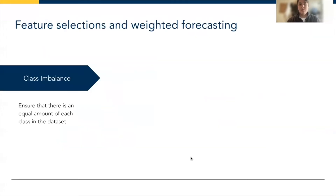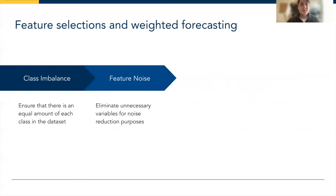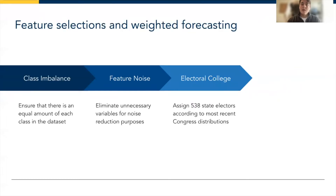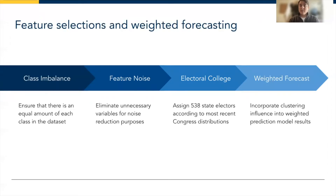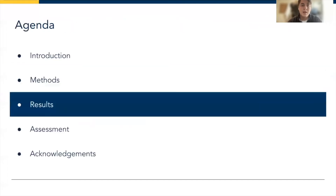From there, looking toward the forecasting aspect, we ensured there were no class imbalances among the data points or variables, reducing them through feature selection to eliminate additional noise and streamline results. We then incorporated the electoral college process, which consists of 538 state electors based on each state's congressional distribution, and incorporated that into the weighted forecasting tool to predict the 2024 United States presidential election.